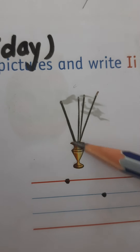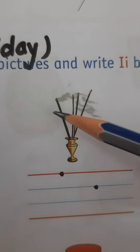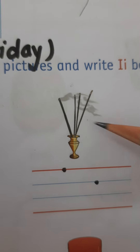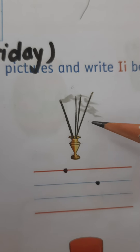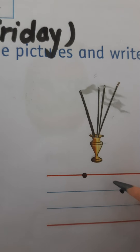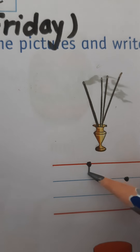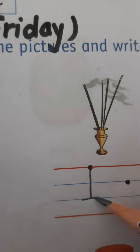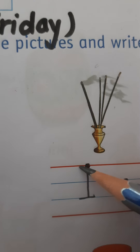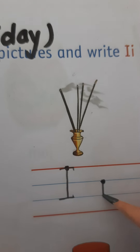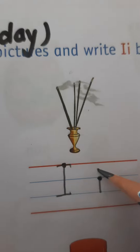So next picture — what are these children? These are incense sticks. Agar bati jo hoti hai, unko bolte hain incense stick. So write capital I first. And what is the phonic sound? Incense sticks. And this is small i.